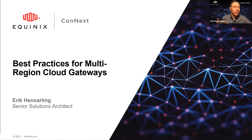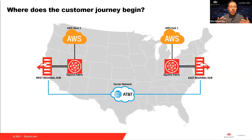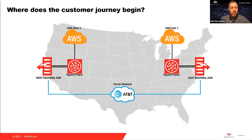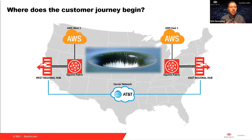Let's start with the customer journey. We traditionally see for most enterprises a two-region deployment with Equinix deployed on Fabric, where there is an East Coast and a West Coast region. This is a very American-centric version — it could be any other deployment around the world: London, Frankfurt, Singapore, Tokyo. Insert your region. As long as you get two regions, you can orient this strategy around any sort of global deployment you want to go with.